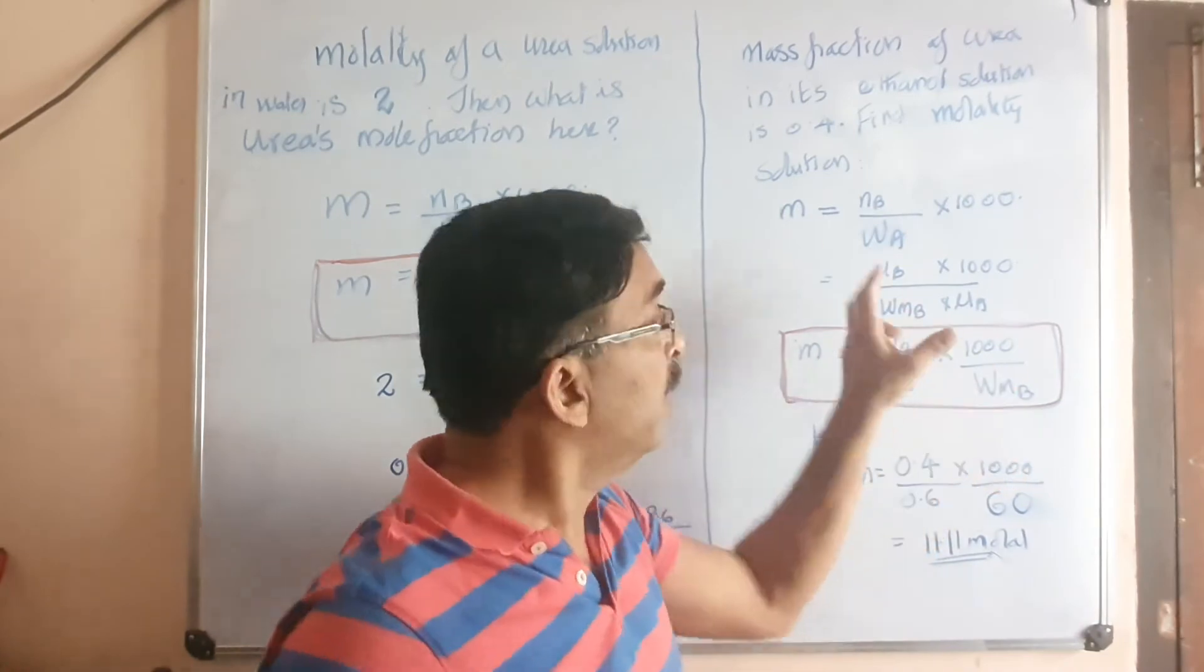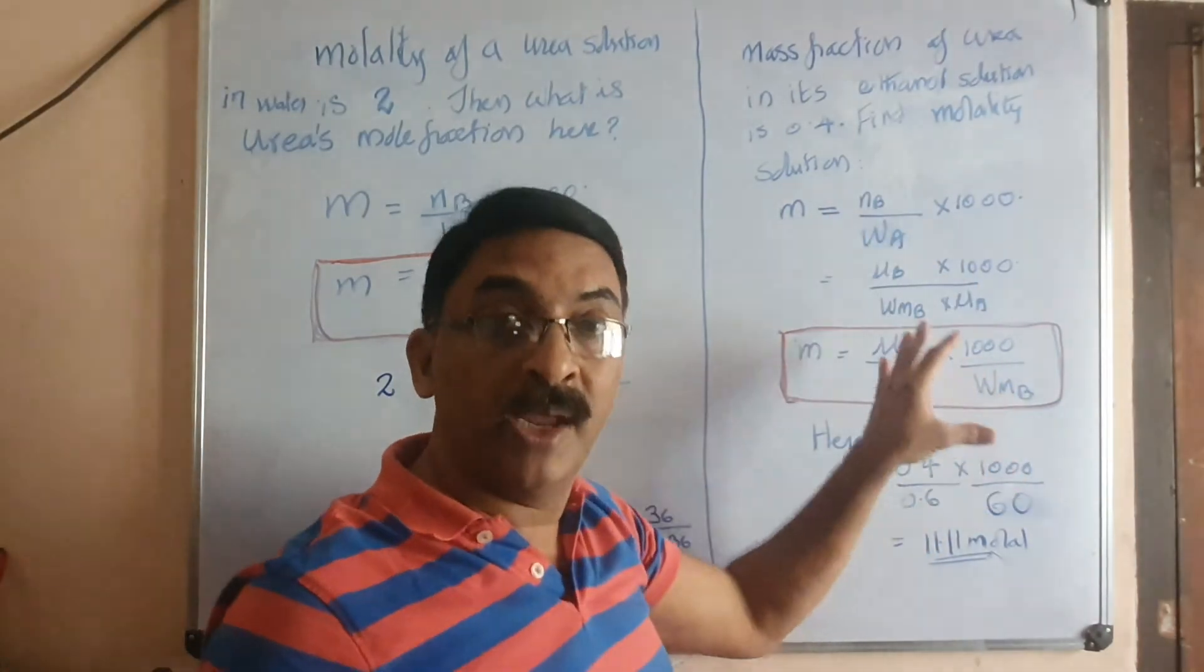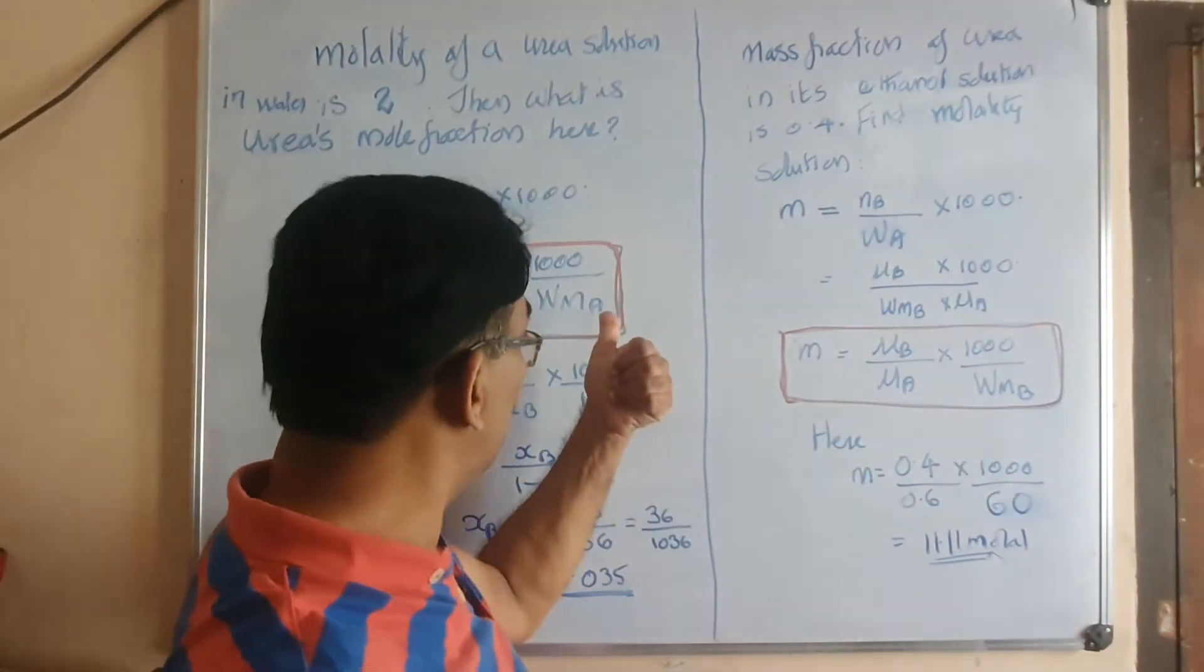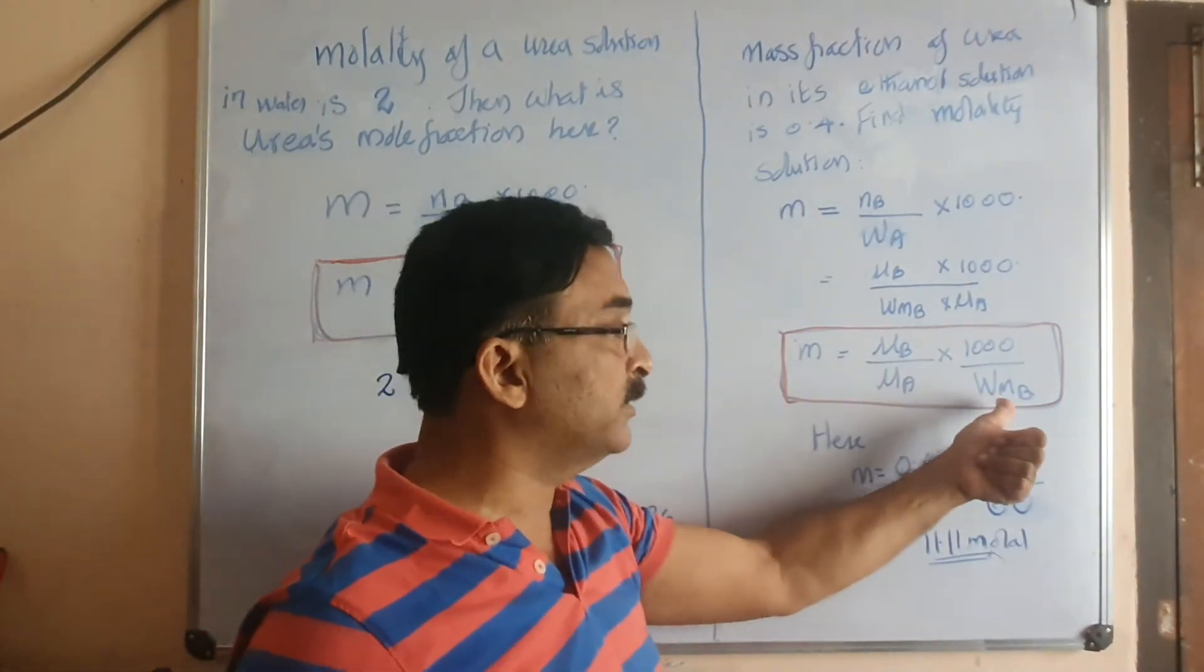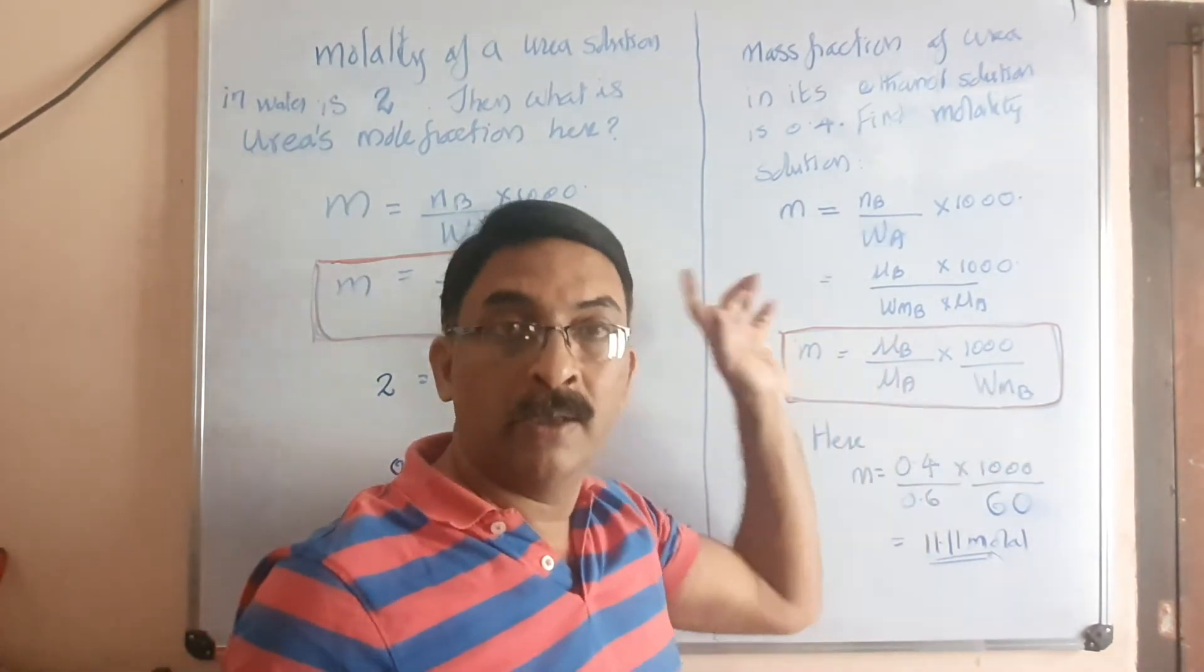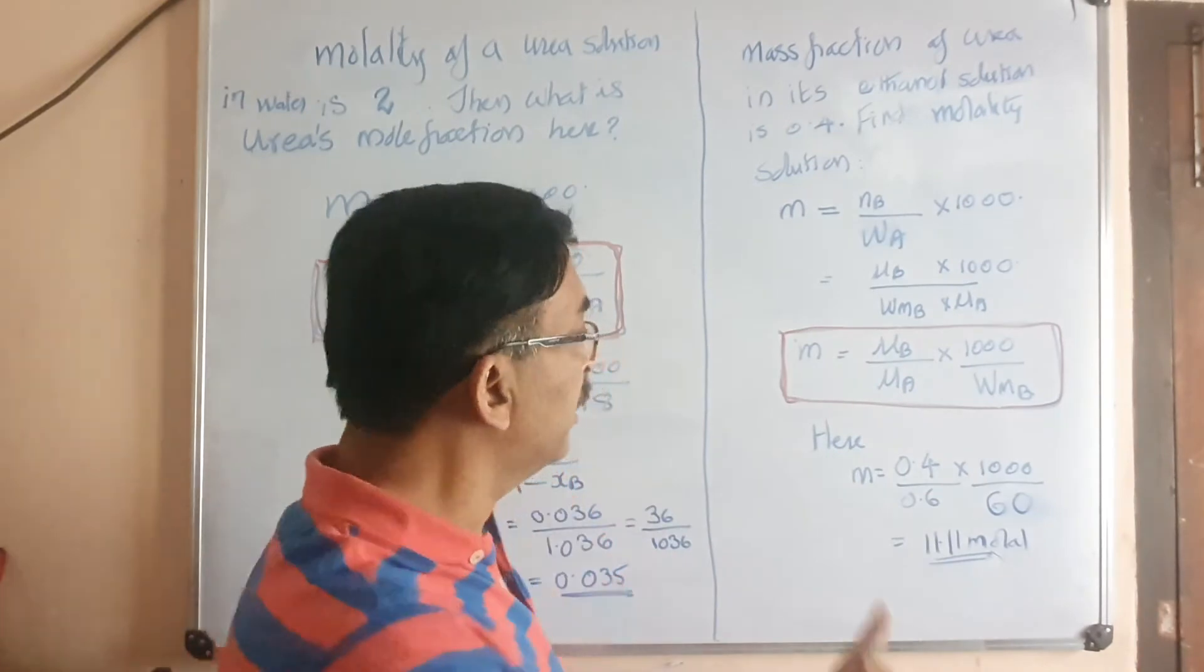But through the explanation we understood why it comes like that. Why it is molecular mass of solvent here and why it is molecular mass of solute here. Through the explanation we understood.